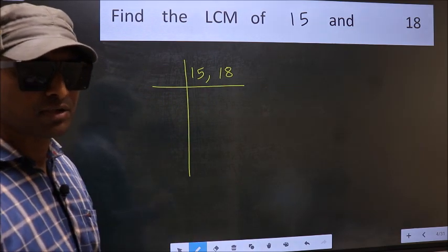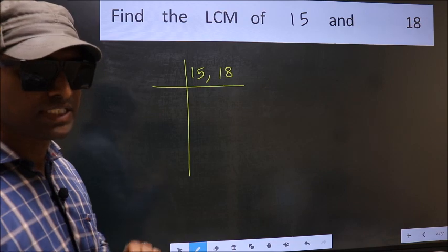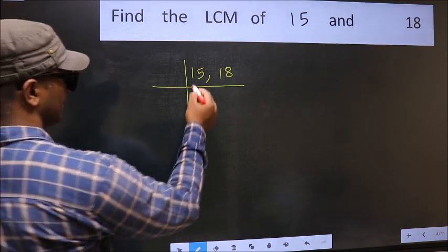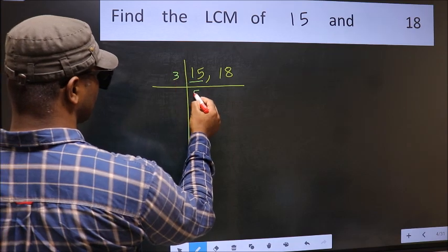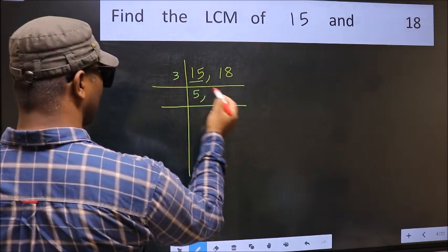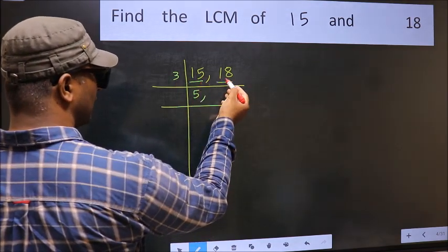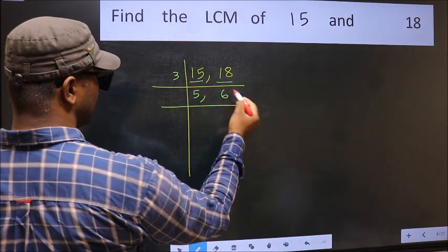Now you should focus on the first number, which is 15 here. Now 15 is 3 fives, 15. The other number is 18. When do we get 18 in 3 table? 3, 6, 18.